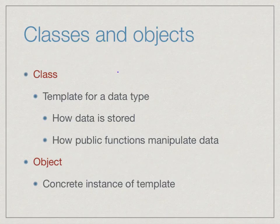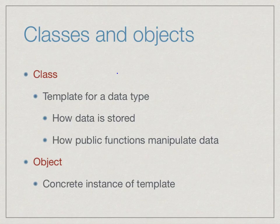In the last lecture we saw that in object oriented programming we define a data type through a template called a class, which defines the internal data implementation and the functions that we use to manipulate the data type. Then we create instances of this data type as objects.